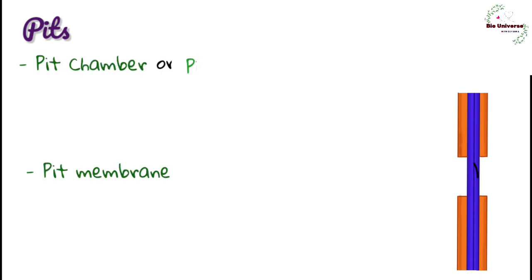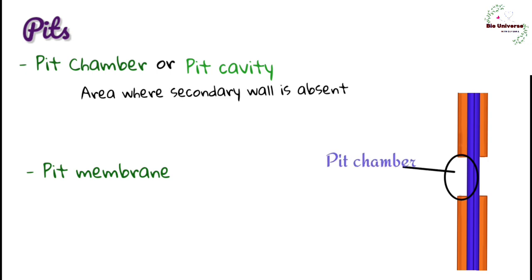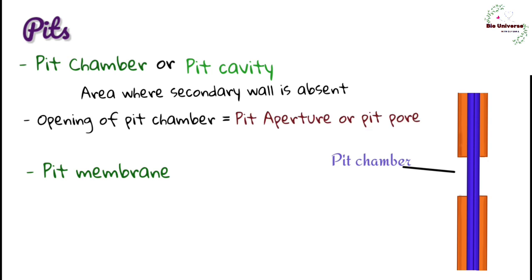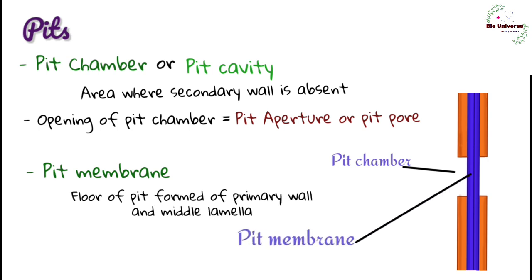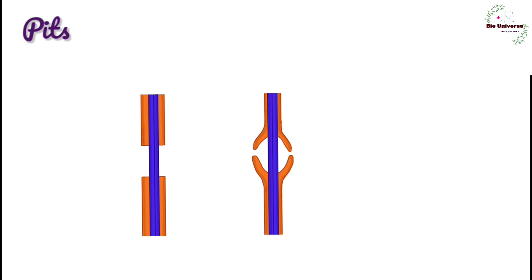Pit chamber or pit cavity is the depression in the wall representing the area where secondary wall is absent. Opening of pit chamber into the cell is called pit aperture or pit pore. Pit membrane or closing membrane is the floor of the pit which is formed of primary wall and middle lamella between adjacent cells. Pit membrane is permeable due to permeability of primary wall. Minute submicroscopic pores may also occur. Depending upon the shape of the pit chamber, pits are two types, simple and bordered.